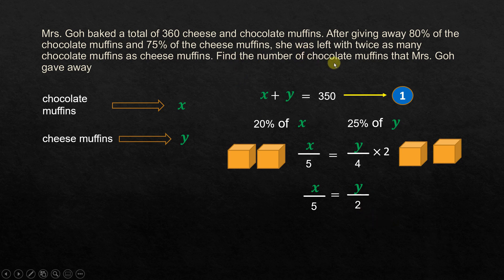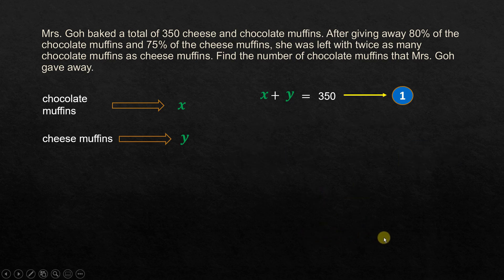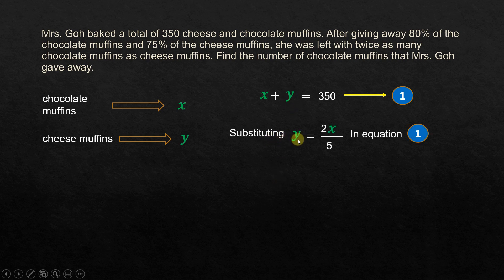We need to find the number of chocolate muffins, which means we need the value of X. So I will express Y in terms of X. From X over 5 equals Y over 2, cross-multiplying gives Y equals 2X over 5. Now we know the value of Y in terms of X, and we can substitute it into the first equation.